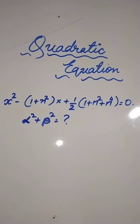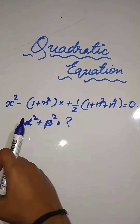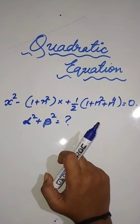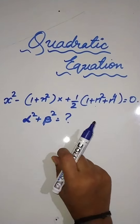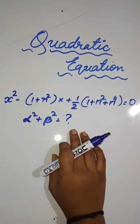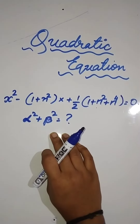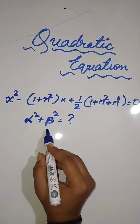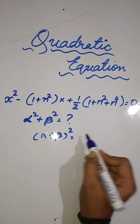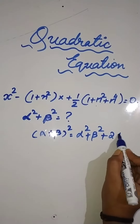Hey viewers, so in this video let us solve this question. This equation is in the form of ax² + bx + c = 0, which is a quadratic equation. Here we have to find what is α² + β². What strikes in your mind is: α + β whole square is equal to α² + β² + 2αβ.